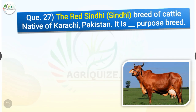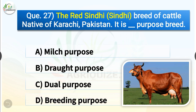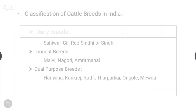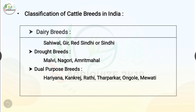Question number 27. The Red Sindhi breed of cattle, native to Karachi, Pakistan, is a dash purpose breed. The options are milch purpose, drought purpose, dual purpose or breeding purpose. The correct answer is option A, milch purpose. So Red Sindhi is a milch purpose breed. Dairy breeds include Sahiwal, Gir and Red Sindhi. Drought breeds include Malvi, Nagori and Amritmahal. Dual purpose breeds include Haryana, Kankrej, Rathi, Tharparkar, Ongole and Mewati.